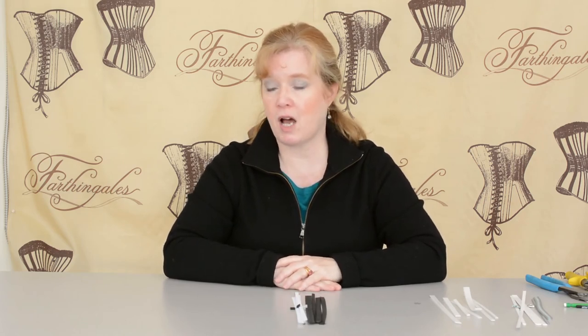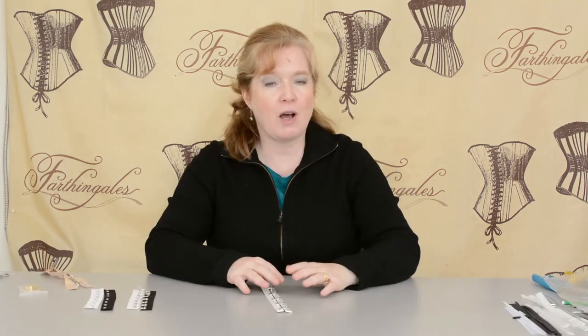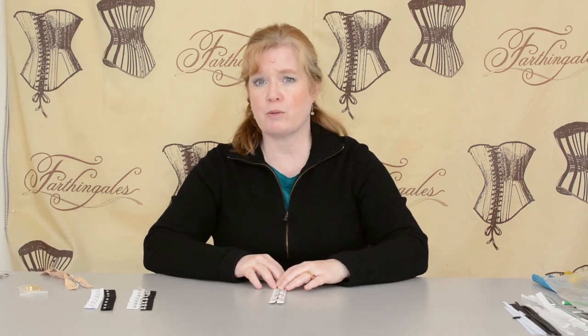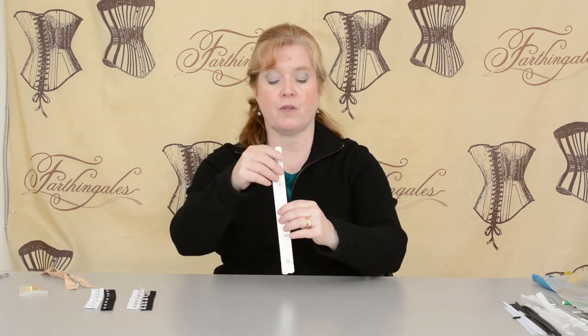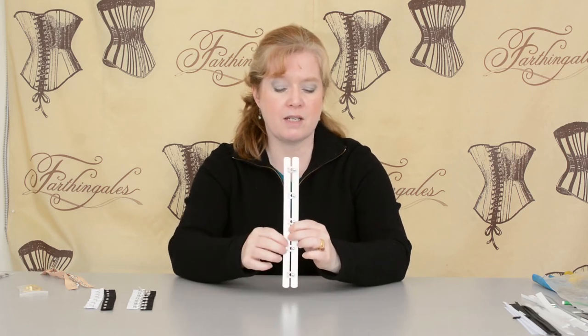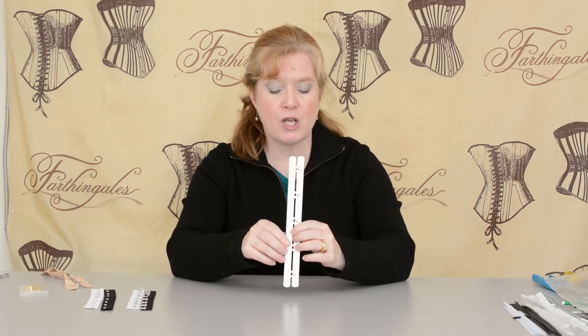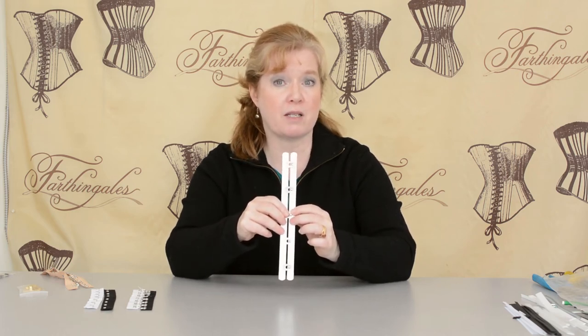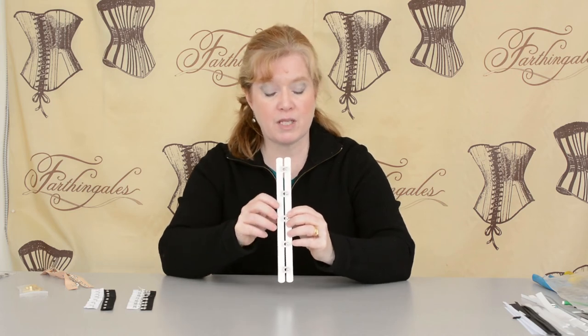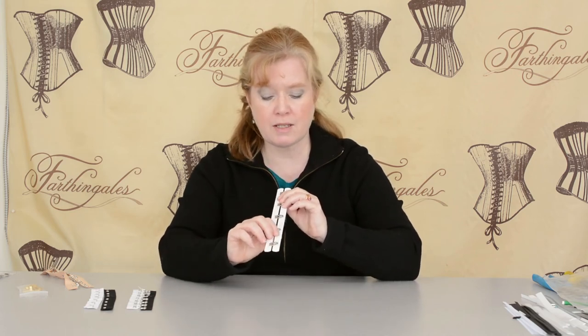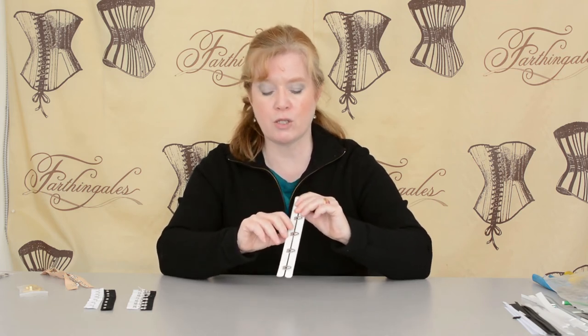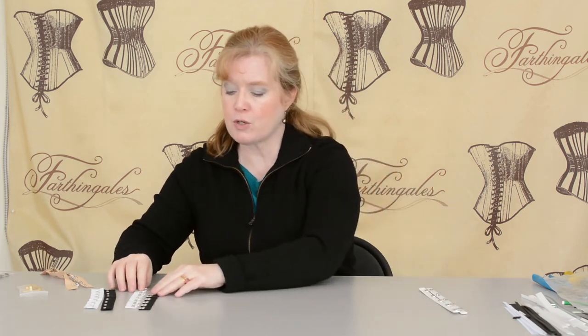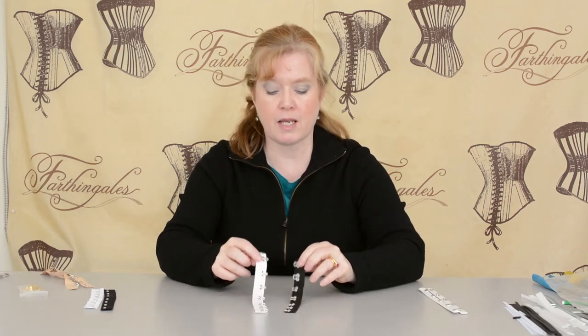That's it for boning. I'm going to move on now to hooks and eyes and other closures. I've talked about busks as a closure, and busks are the best choice for a closure in my opinion. They are the most traditional choice. The reason they're the best is because they've got this steel down either side. So it makes a very rigid front and makes it easier to do the busk up. But some people like to use hook and eyes, and that's okay. You can still slide a bone behind hooks and eyes.